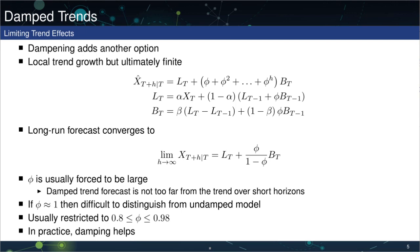There's an additional wrinkle we can use with Holt's model: damped trends. This adds a third parameter, phi. The role of phi is to damp the trend. We had a term in the forecast which was H times B_T, implying that as H gets large, you continue along the current trend — so if B_T is positive, every period you go into the future the trend simply becomes larger and larger in a linear manner.